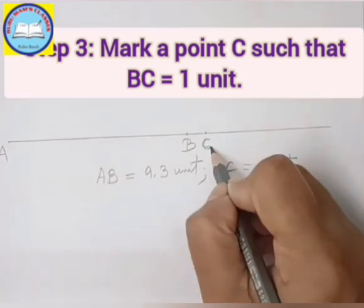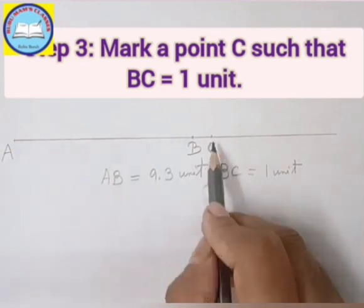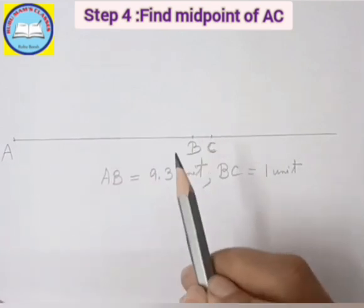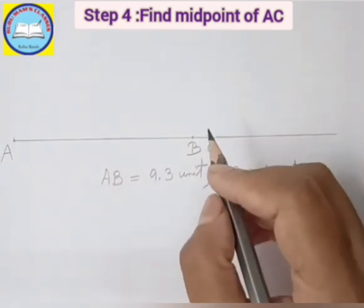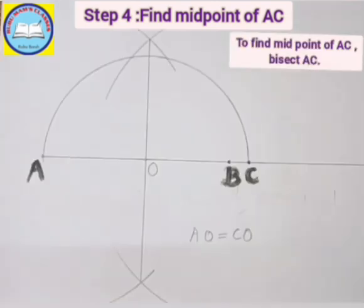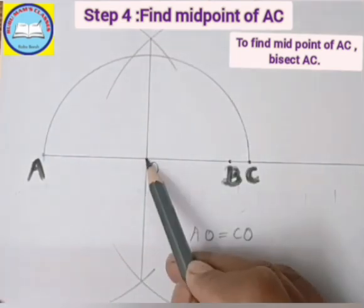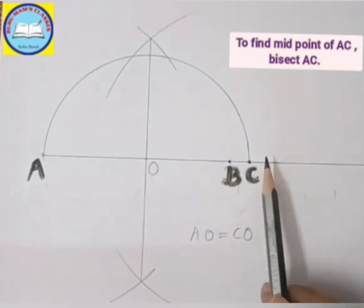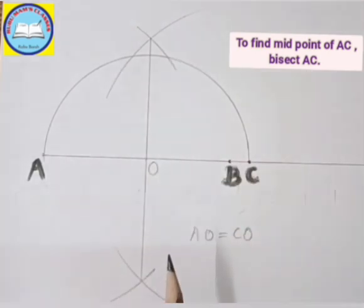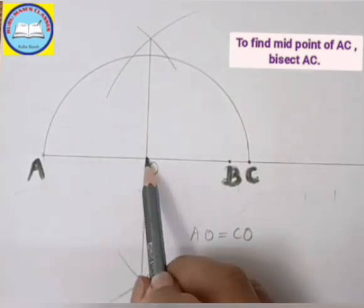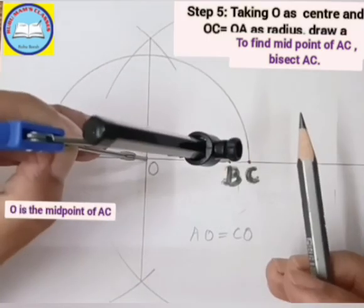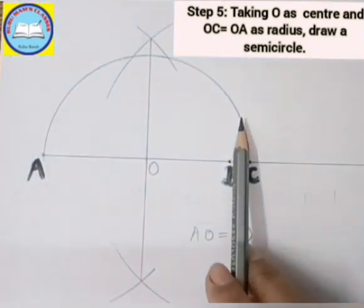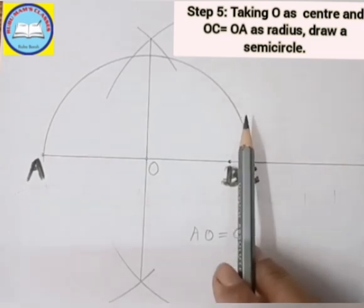So we have step 1, step 2, step 3. Now AC is the full length, which is 9.3 plus 1, that means 10.3. Step 4: you need to bisect AC to find midpoint O, so OA equals OC. You already learned to bisect a line in junior grades — using more than half the length as radius, make a bisector. Then step 5: taking radius OC, draw a half circle.